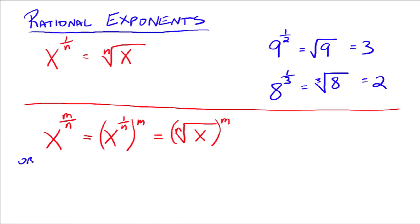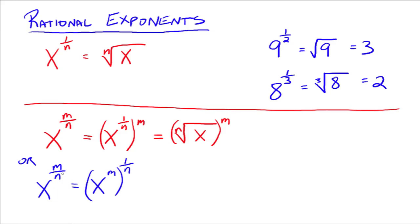There's more. For x to the m over n, we can also write it as x to the m, all raised to the 1 over n — multiplying the exponents gives you back m over n. This time, 1 over n is the exponent for the base x to the m, so that's the nth root of x to the m. Notice the denominator n becomes the index, and the numerator m can go either inside or outside the radical.